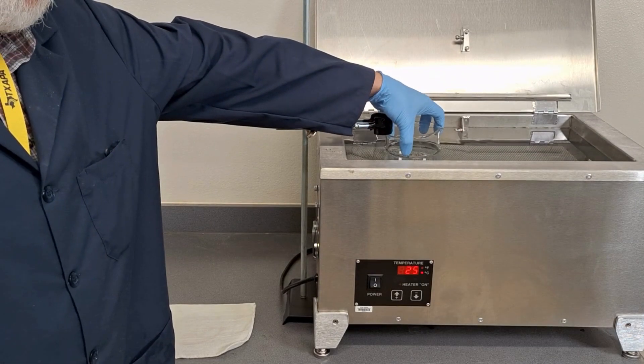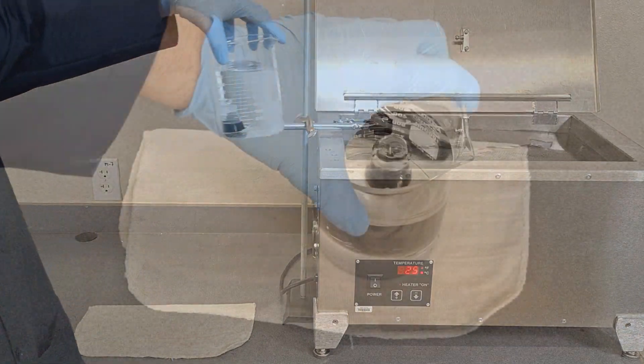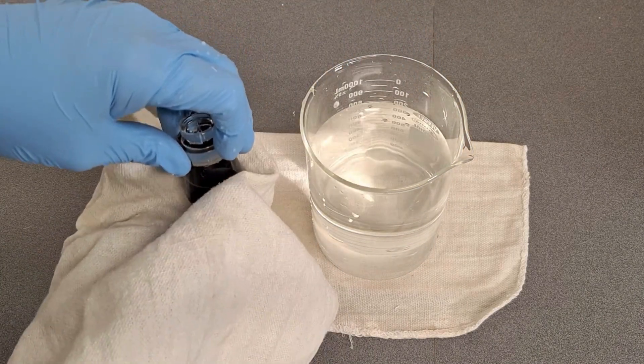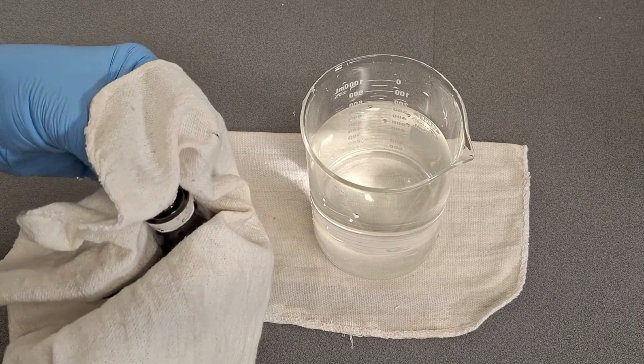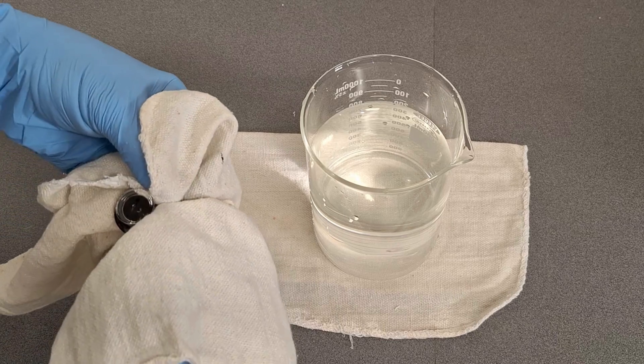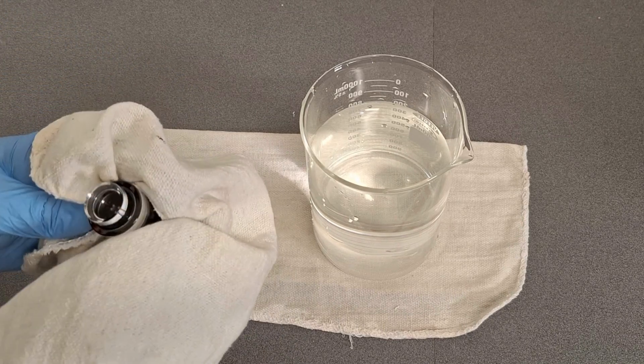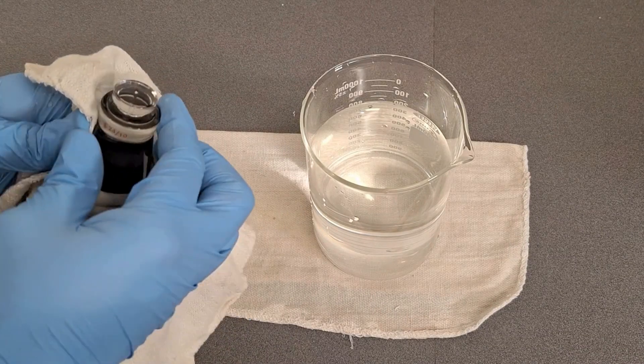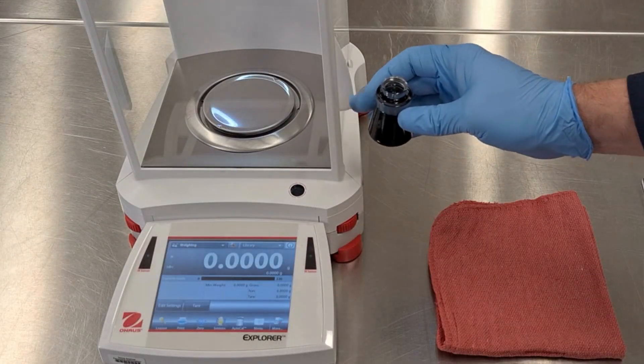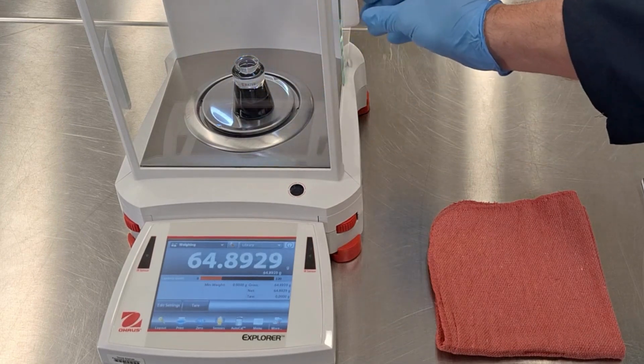After 30 minutes, remove the pycnometer from the water bath. Promptly dry the stopper with a single swipe of a dry towel and quickly dry the rest of the outside of the pycnometer. Weigh the pycnometer to the nearest 0.001 grams and record this weight.